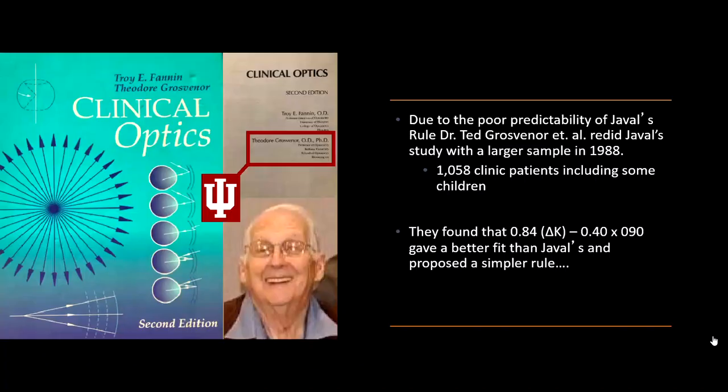That was modified by Theodore Grosvenor, an IU professor. Here you can see one of his common books that he wrote back in the 90s and 2000s. There's a picture of him, and he's an IU professor here for many years, 20, 30 years. Due to the poor predictability of Javal's rule, Dr. Ted Grosvenor redid Javal's rule with a larger study in 1988, using over 1,000 patients, including children.